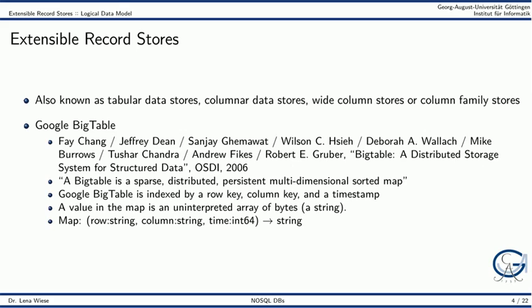That is, we can access a value by a row key, a column key and a timestamp. A value is an arbitrary byte array. So in total we have a huge map that maps the three dimensions row, column and time to a value. In addition, storage is sorted by the row key.